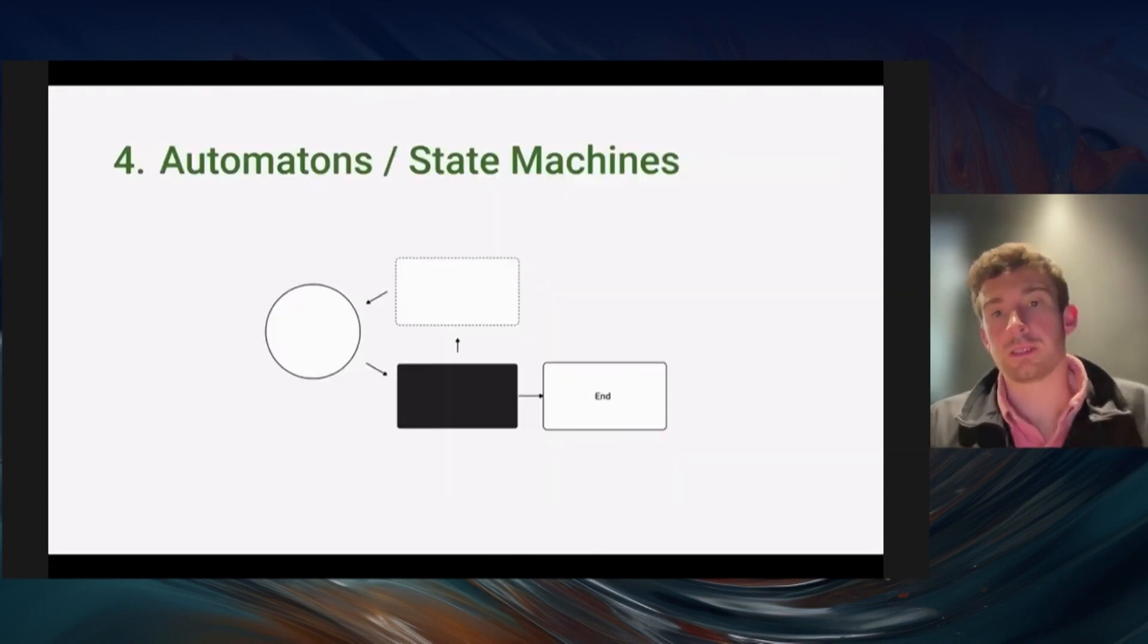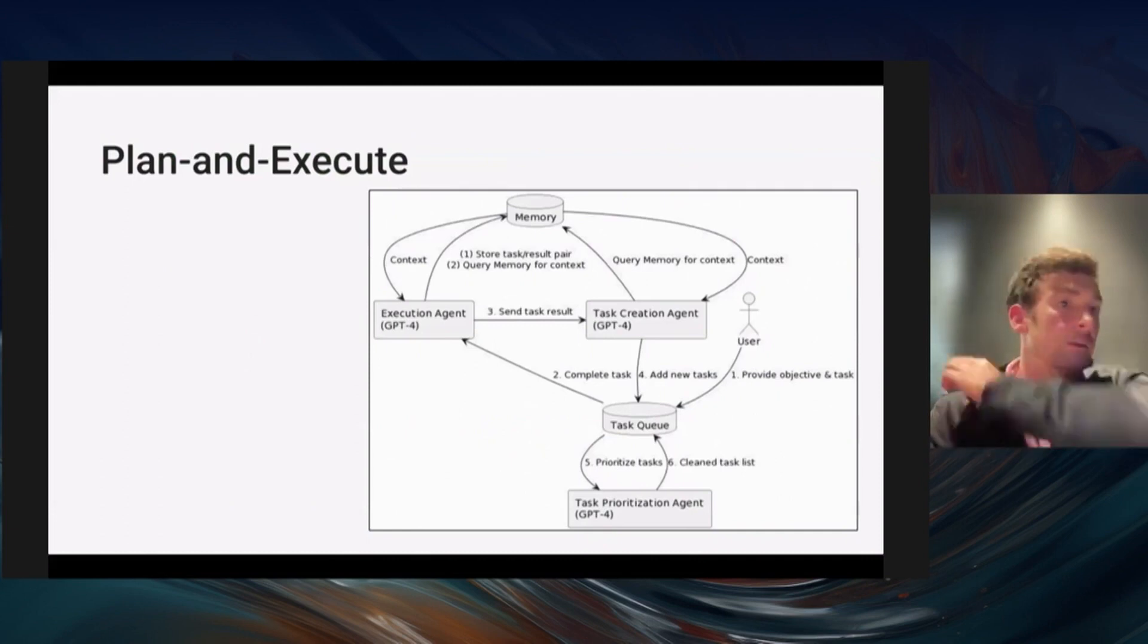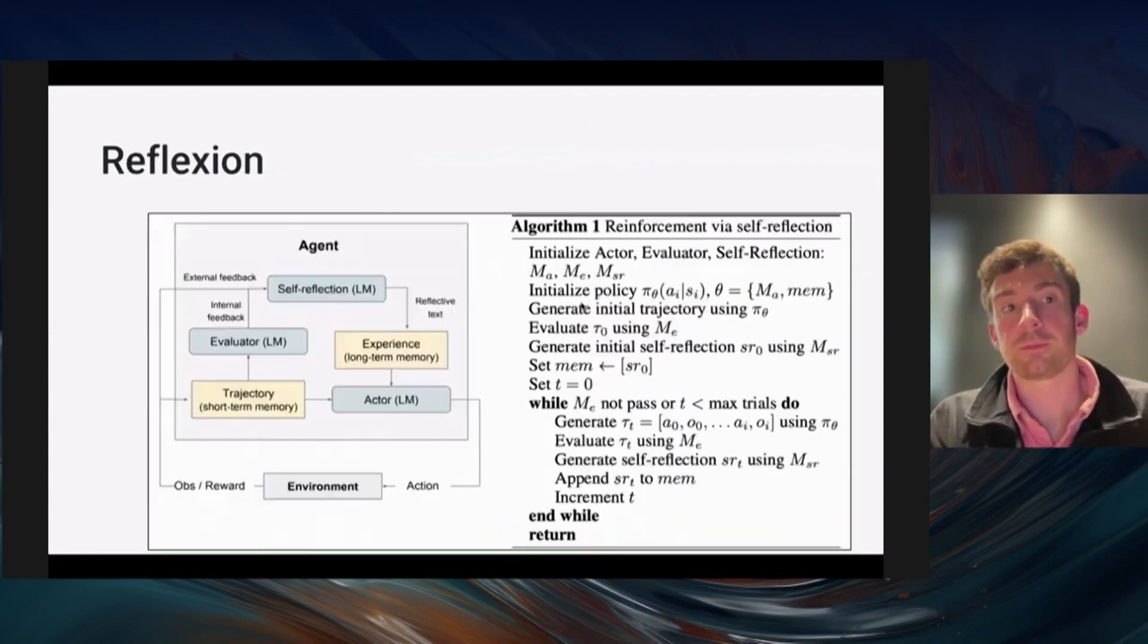That's the next differentiation between stage four or level four, where we have these automatons or state machines. You're still using the language models to determine what to do and what paths to take. Now it can enter into cycles though, and this starts to become really powerful. Some examples of this: this is from Baby AGI. You can see here there's a few different types of agents and it cycles between them. It's giving different prompts to different agents and asking it to do different things, breaking down the planning process into a bunch of discrete steps. Reflexion is a similar one. You can see here there's multiple LLM calls and there's this cycle between them.